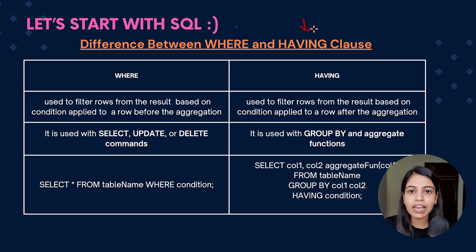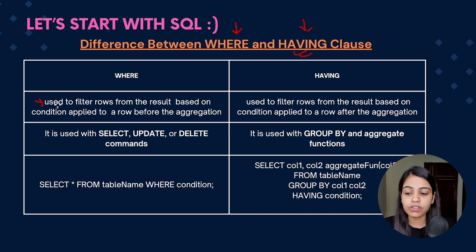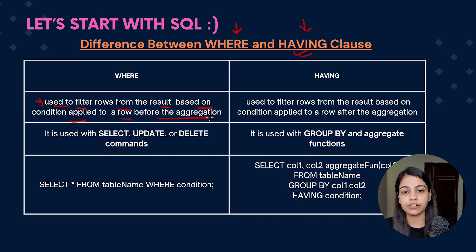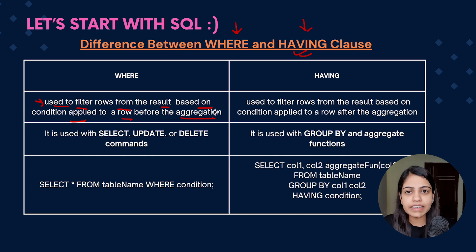When I was teaching about the HAVING clause, many people had a doubt: why are we even learning about the HAVING clause? The HAVING clause is basically helping us to filter out data based on a given condition. So if the WHERE clause already does that, what was the need of the HAVING clause? The WHERE clause is a clause which is basically used to filter rows from the result based on a condition applied to a row before aggregation.